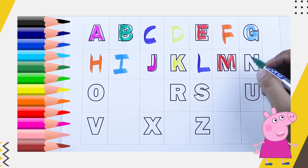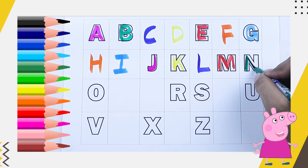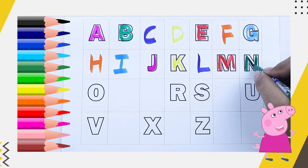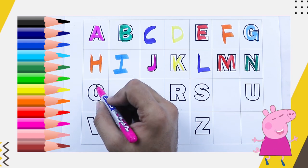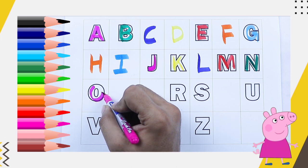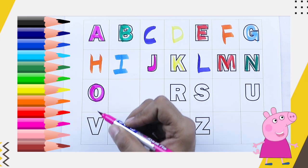What next? N, green color, capital N, N for nest. Pink color, O, O for octopus.